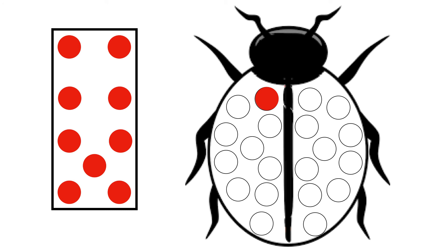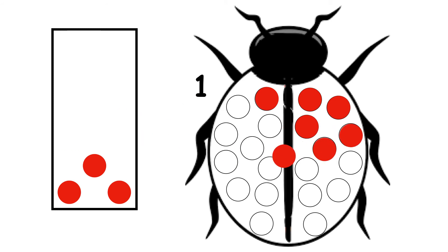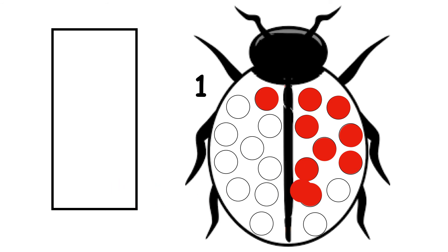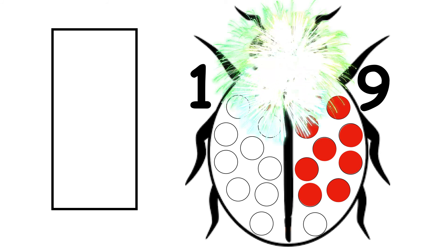Ladybird has one spot. How many more does she need to have 10 spots altogether? 1, 2, 3, 4, 5, 6, 7, 8, 9. 1 and 9 makes 10.